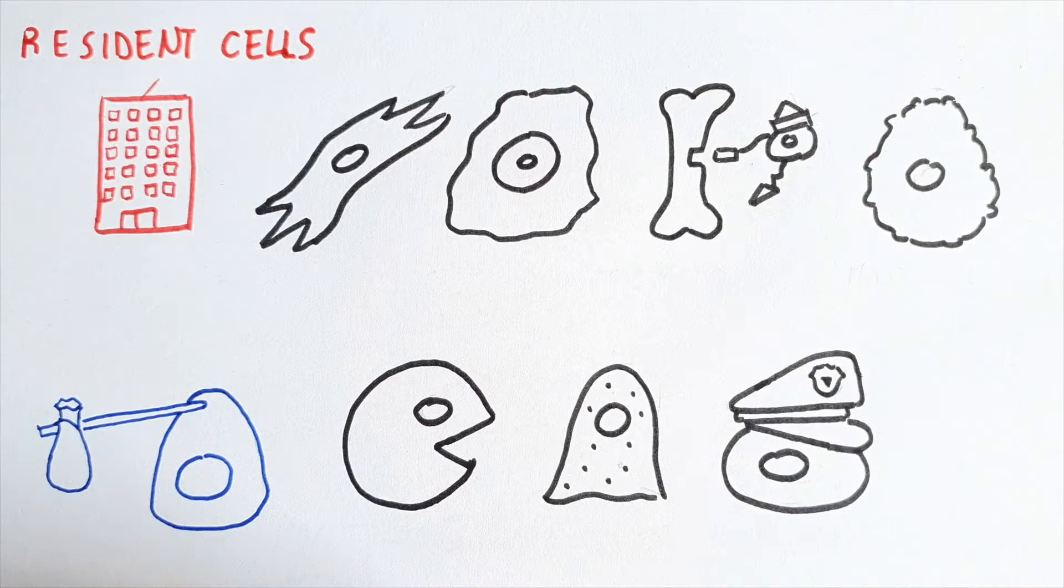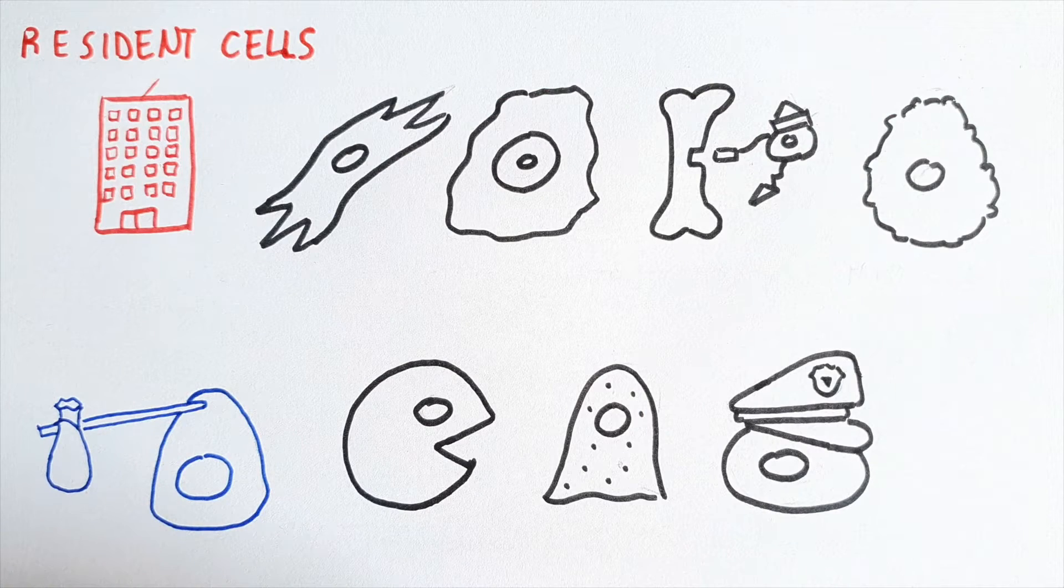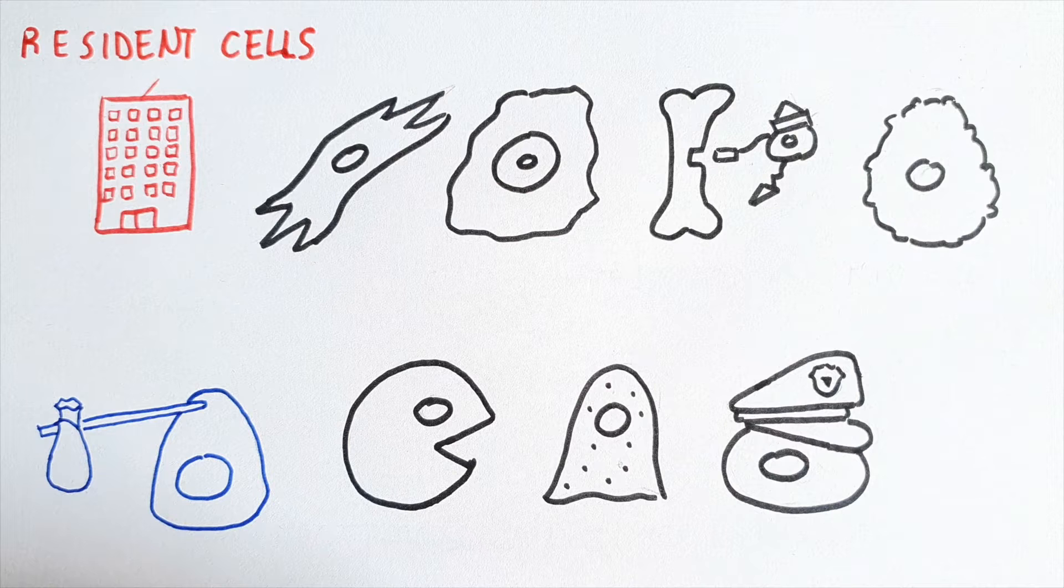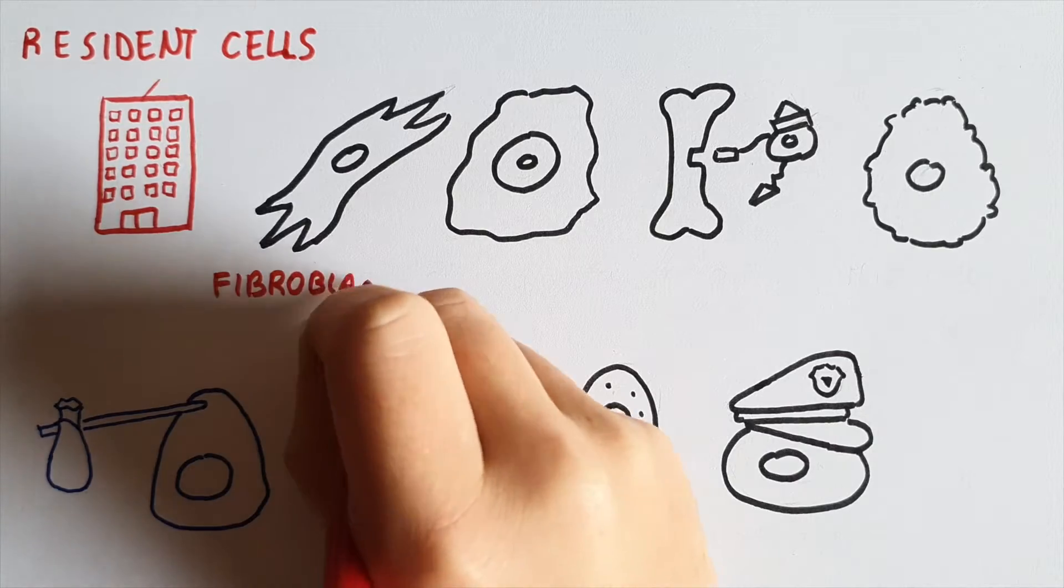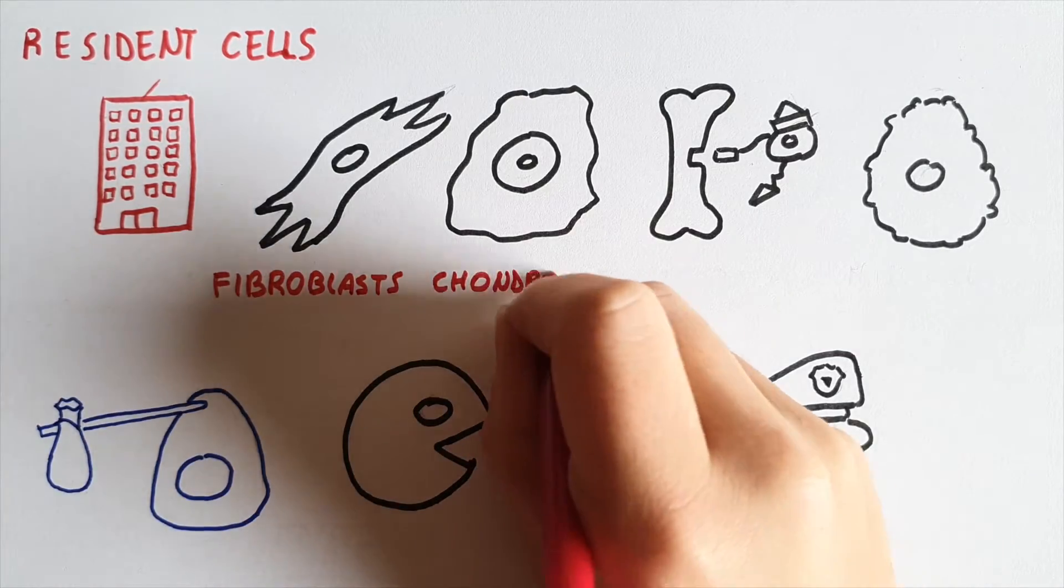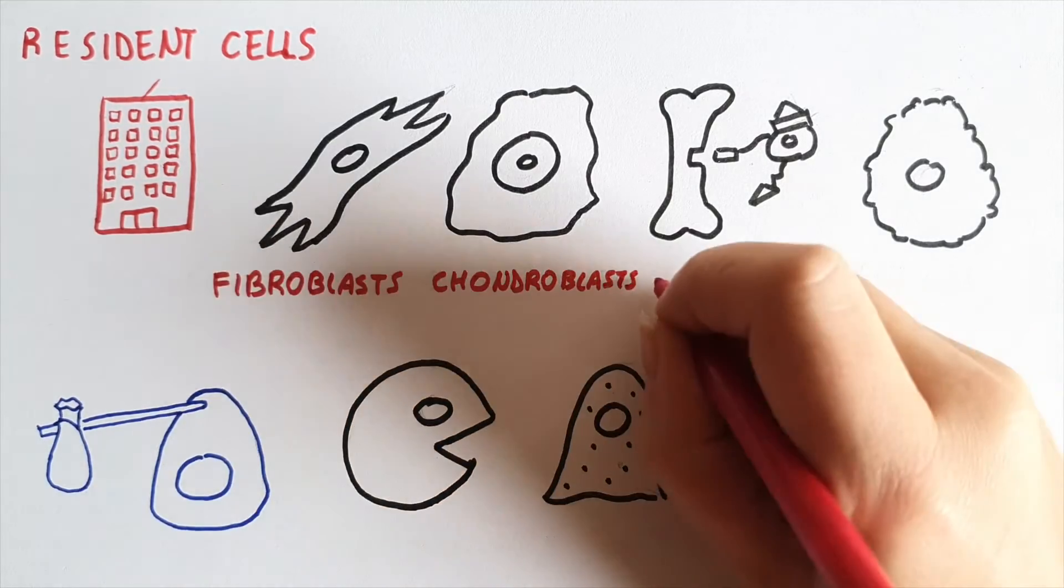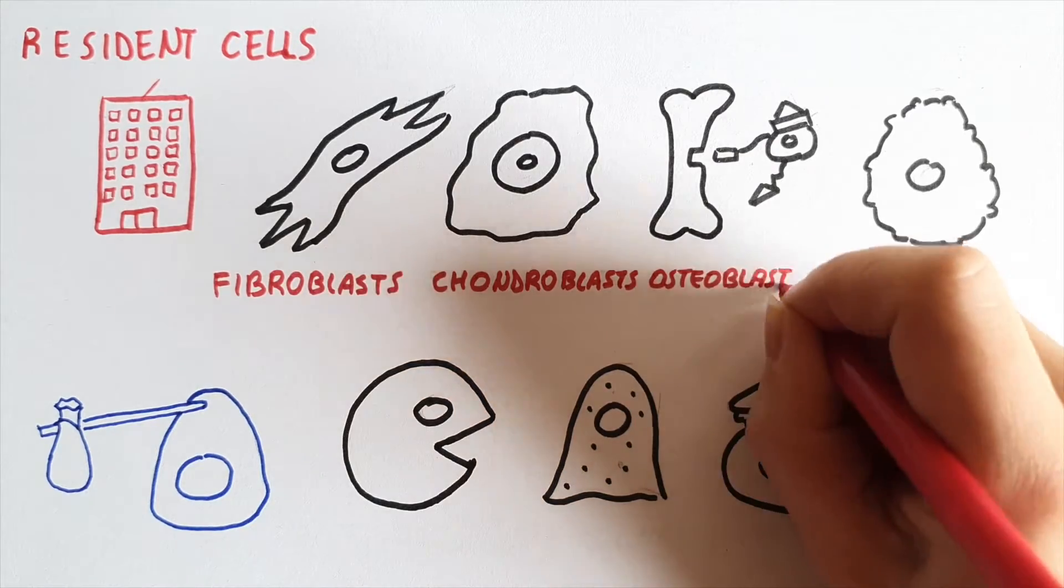The cell population of connective tissue, so the cells located in it, is composed of resident cells which are permanently located in the tissue and collaborate actively to its architecture. These are fibroblasts, chondroblasts, osteoblasts, and mast cells.